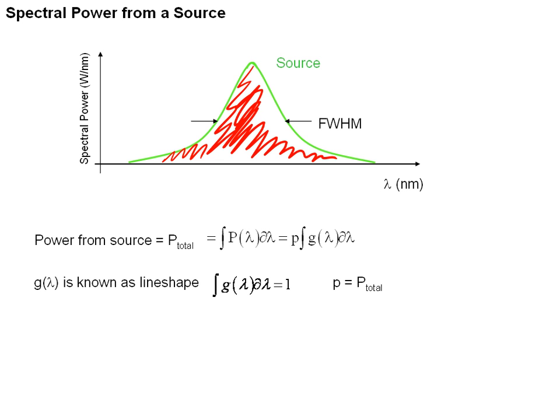A way to think about it: the line shape is the probability that a photon, or a particle of light, will be emitted from this light source at any particular color or wavelength lambda. This makes sense since the probability that the photons were emitted is 100%, so the integral of the probability over all the different colors is 1. That is the line shape function g.